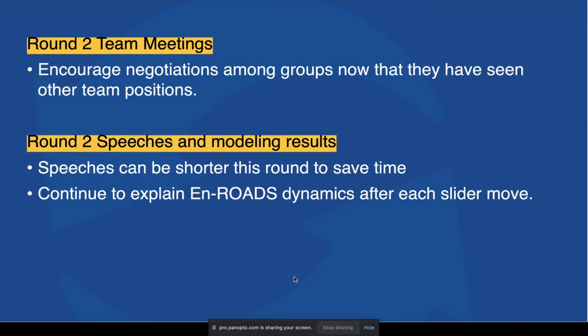In the second round, focus on encouraging negotiations among the groups. Now that they've seen the other players and the positions they're taking, you can stir the pot — suggest they go talk to another group and encourage more interaction. When it comes to the speeches and modeling results in this round, the speeches can be a little shorter to save time, though if you have extra time, allow them to be longer — it can be a really fun part. Continue to explain En-ROADS dynamics after each slider move; we don't want En-ROADS to appear as a black box. Take the time to explore why things are changing and answer any questions.